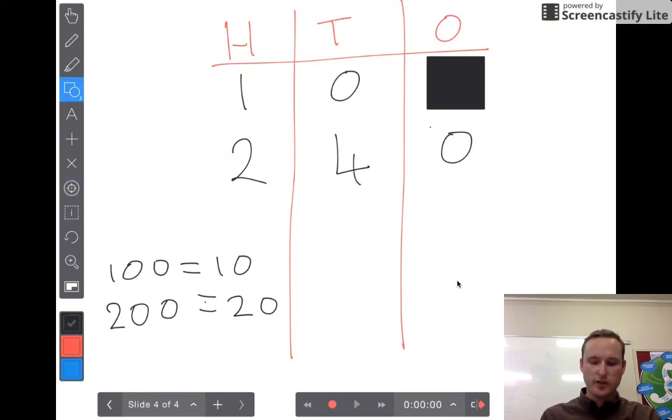Again, let's try that little trick of covering up that zero in our ones column. Does that give you the same answer? 24.